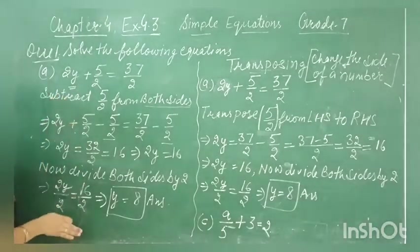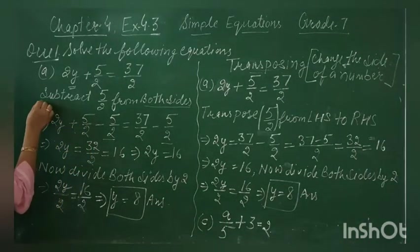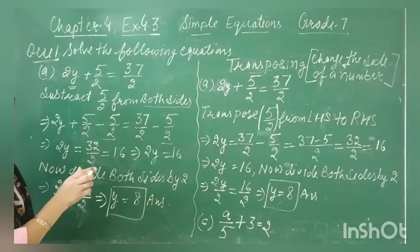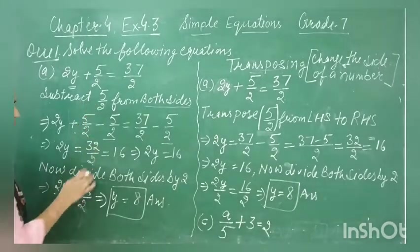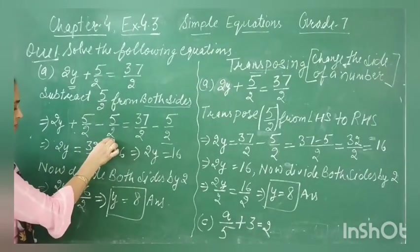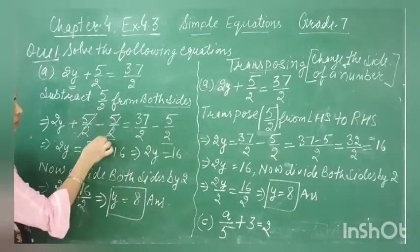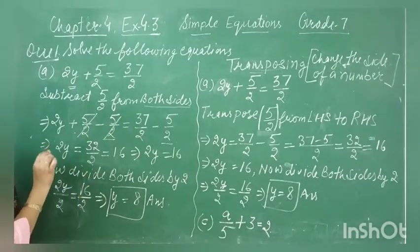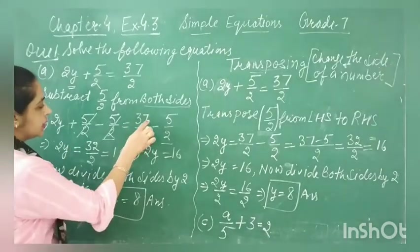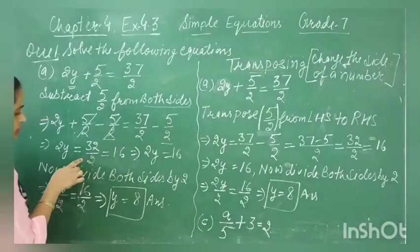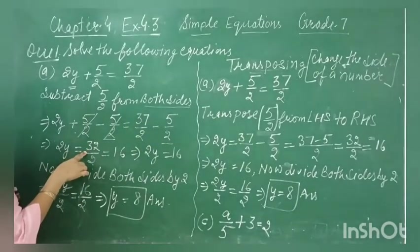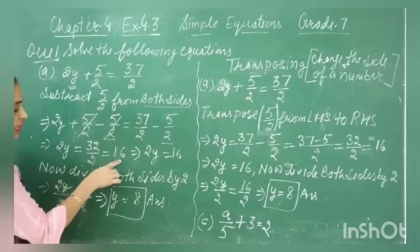In this question it is not important to write 'step 1, step 2' — follow the same steps, but the labels are not important to write. When we subtract 5 by 2 from the left hand side, the plus term is cancelled with the minus term, giving us 2y on the left. On the right: 37 by 2 minus 5 by 2 gives 32 by 2, which simplifies to 16.